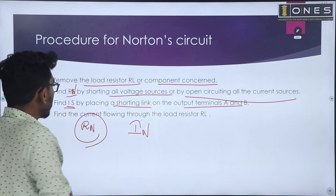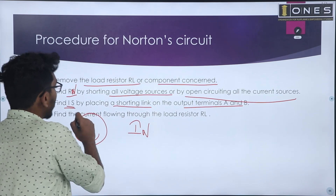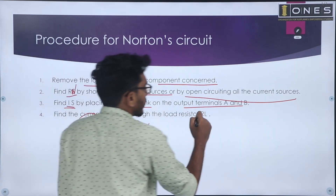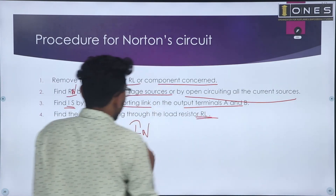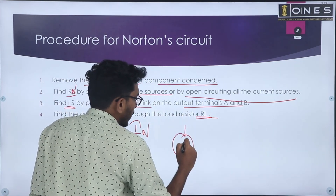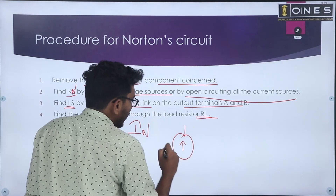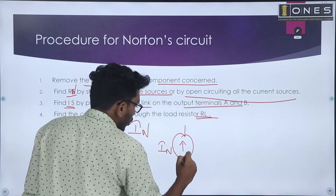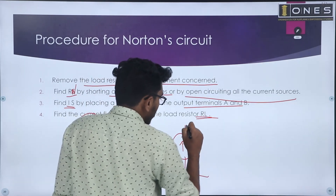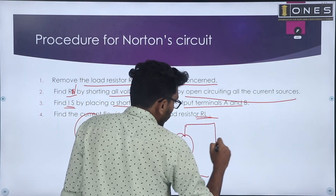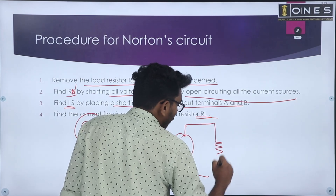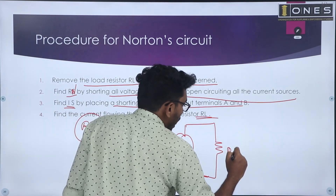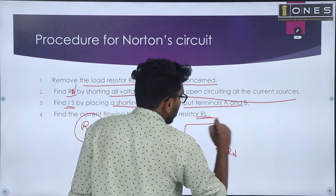The fourth step is: find the current flowing through the load resistance. After obtaining the Norton's equivalent circuit — that is, after obtaining Norton's current IN — the parallel resistance will be used to solve for the load current.